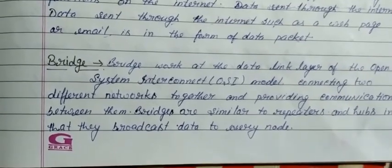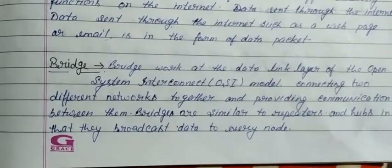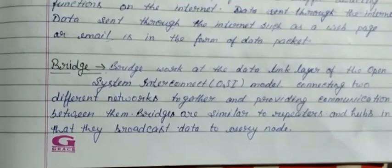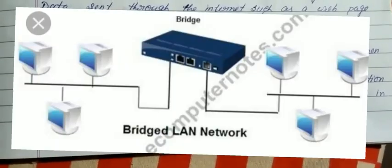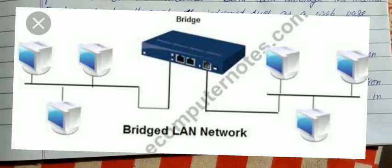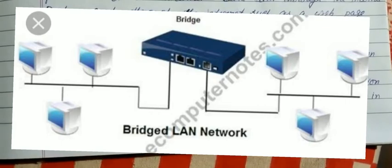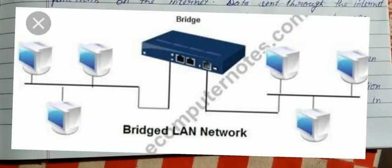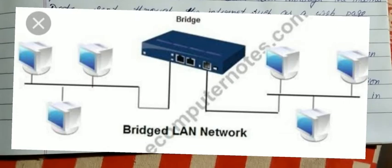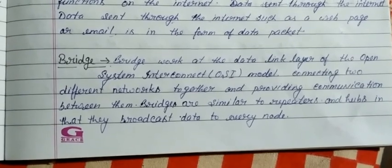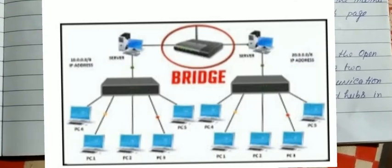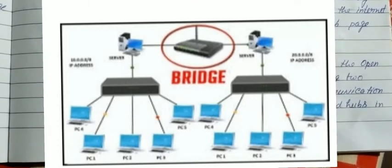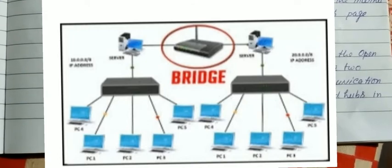Bridge ki simple baat karein to bridge kya karta hai? Kisi do points ko jodne ke liye use kiya jaata hai — jaise nadi ke upar bana hua bridge. Aap sab jaante hain bridge kya hota hai: kisi nadi ko paar karne ke liye uske upar flyover banate hain, usi ko bridge bolte hain. Same yahan bhi — computer network mein bridge do alag-alag networks ke beech connect karne aur communication karne ka kaam karta hai.